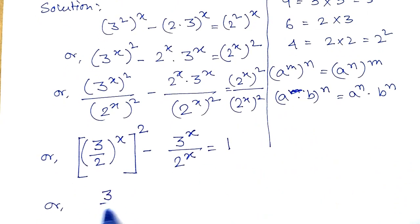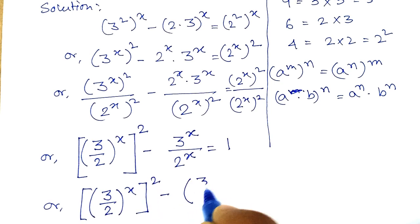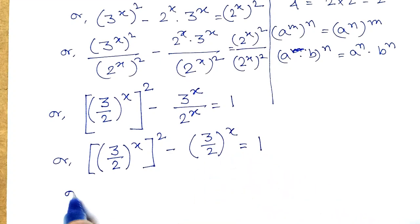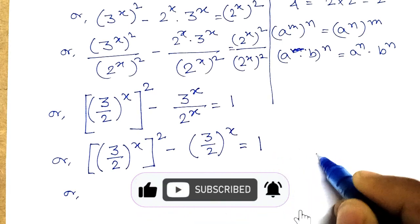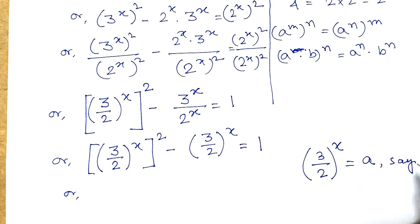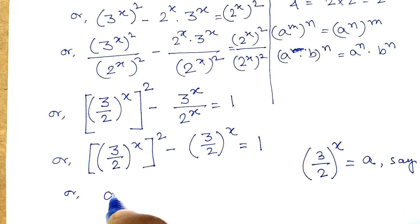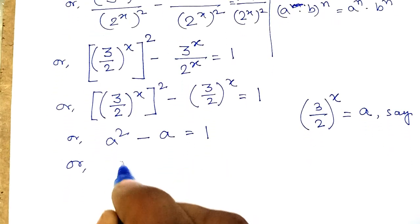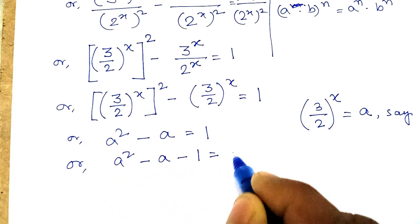We can simplify the equation as (3/2 to the power x) whole square minus (3/2 to the power x) equals 1. Taking the 1 to the left-hand side and letting a equal (3/2)^x, it becomes a squared minus a, and moving 1 across gives us a squared minus a minus 1 equals 0.